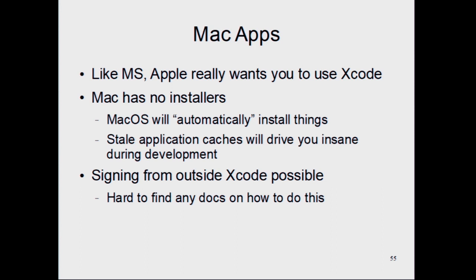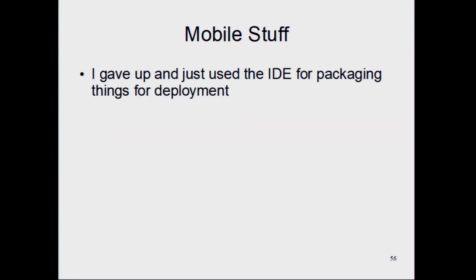For Mac apps, you don't have installers because everything's packaged up as a single binary. During development it's a bit of a pain because the Mac automatically installs things, so you might have multiple versions of the same app — your development version and the store version — and it's not clear which is running. You also have to sign stuff, and Apple supplies you the keys. For mobile stuff, Cordova has things for signing, and you just upload to their app stores. As long as you stay within their walled gardens, it's pretty easy.